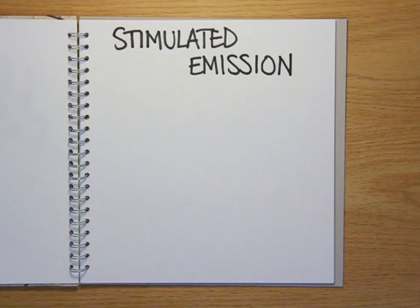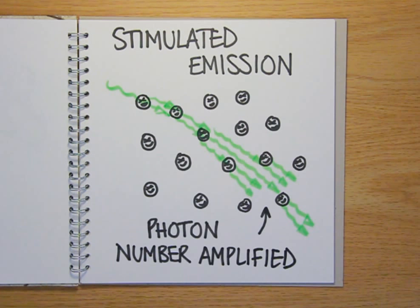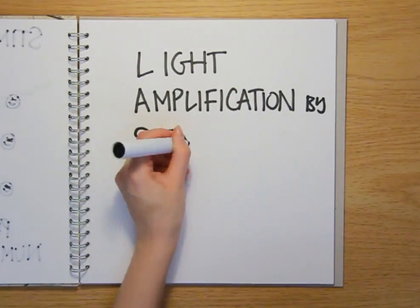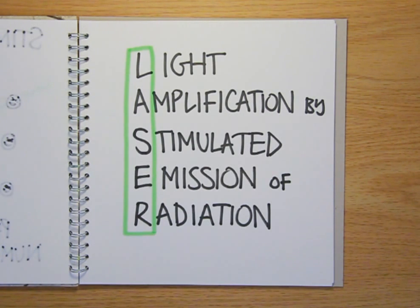This is called stimulated emission, and it means that if you have a material full of excited atoms, you can start with one photon and very quickly amplify this signal to produce millions more, all of them identical to the first. This is known as light amplification by stimulated emission of radiation, or laser for short.